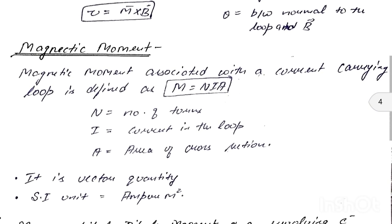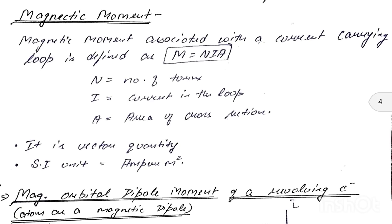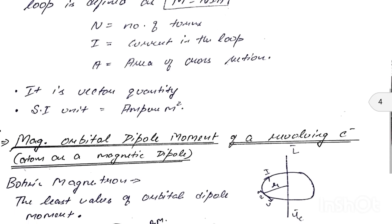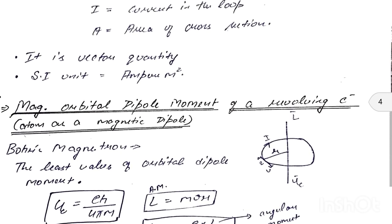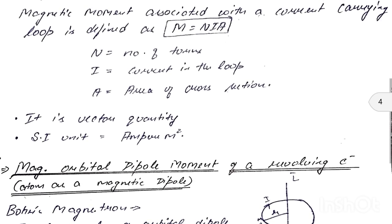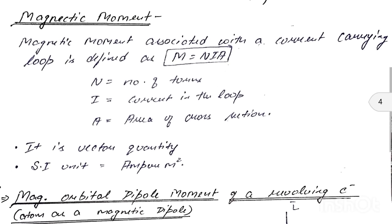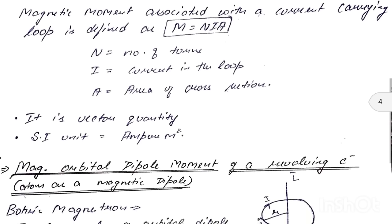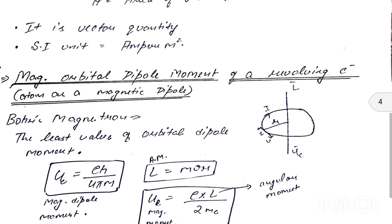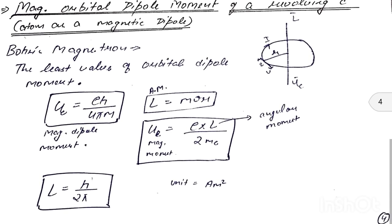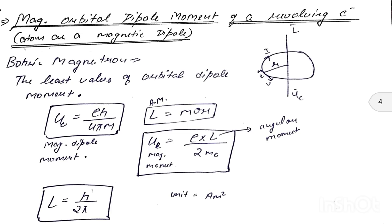Next topic: magnetic moment. The magnetic moment associated with a current-carrying loop is defined as m = NIA, where N is number of turns, I is current in the loop, and A is the area of cross-section. It is a vector quantity with unit ampere·meter².